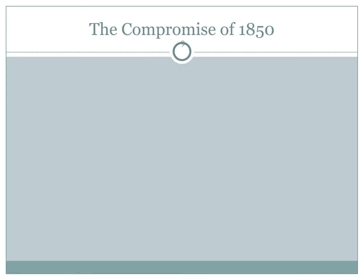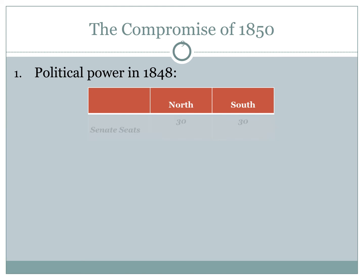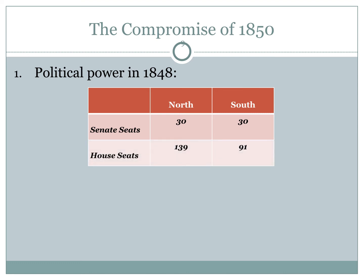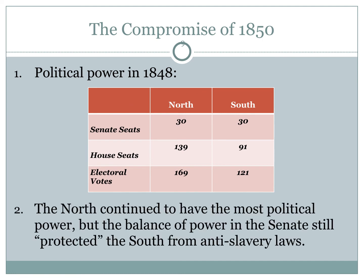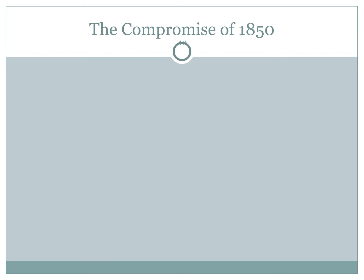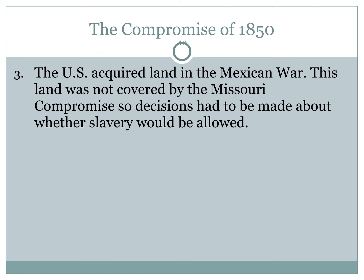Setting the stage for 1848: in the Senate, the North had 30 seats and the South also had 30 seats. The North still had more members in the House — 139 to 91 — which meant more electoral votes, 169 to 121. The North continued to hold most political power, but the Senate balance still protected the South from anti-slavery laws. However, the U.S. had acquired more land through the Mexican War, land not covered by the Missouri Compromise, so a decision had to be reached about slavery in these new territories.